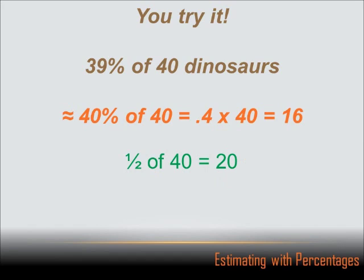It couldn't be 1.6. If I put my decimal point right there, I'd have 1.6. And that's a long way from 20. It couldn't be 160. If I put my decimal point over here and added a zero, the answer would be 160. And 160 is a long way from 20. But .4 times 40 equals 16. 16 is very close to 20. So, 16 is your estimate of 40% or your estimate of 39% of 40 dinosaurs.